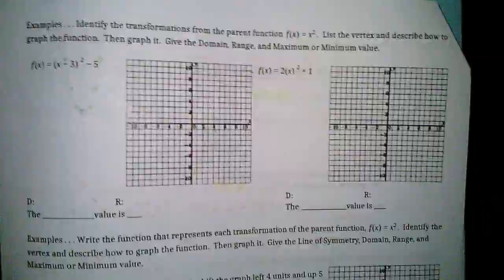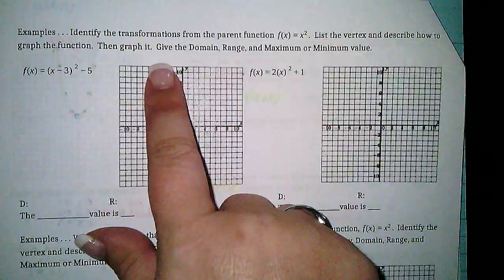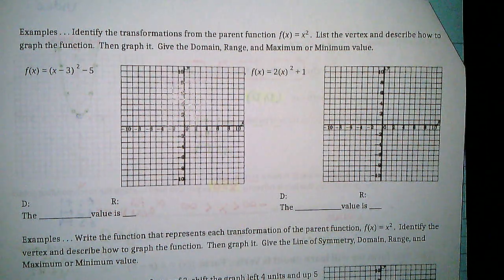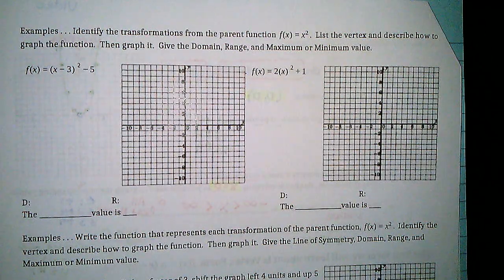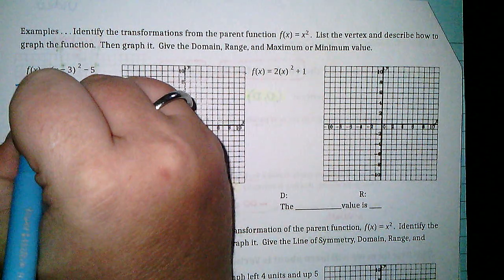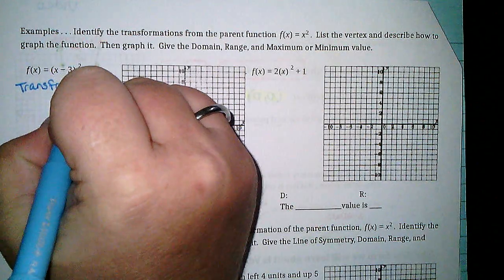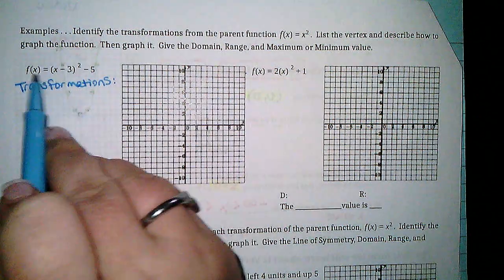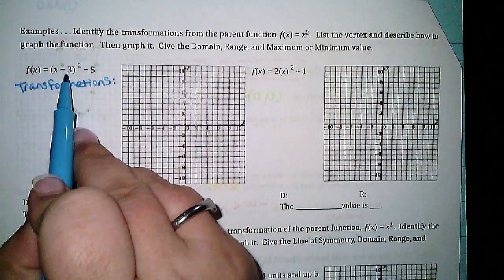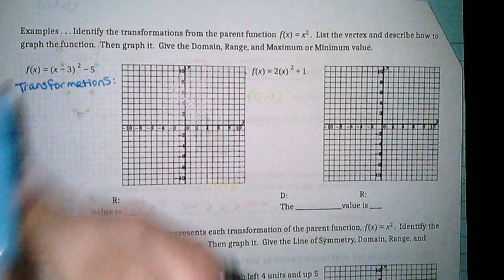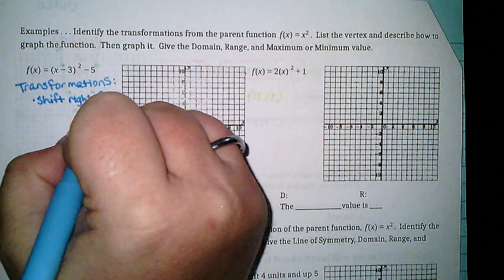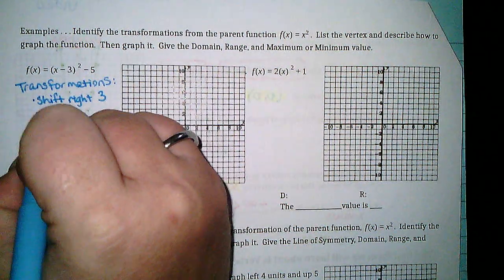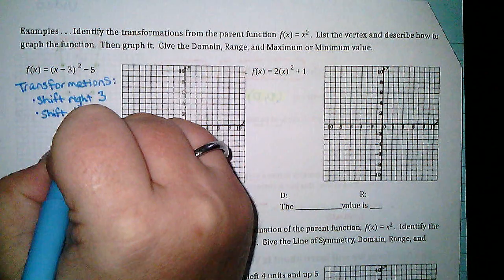Now let's apply this knowledge. When we have these problems, we need to give the transformations, list the vertex, describe how to graph, graph it, and give the domain, range, and maximum or minimum. For the first example: transformations are anything that is not x or the squared. Starting after my equal sign — the minus 3 inside is a shift right 3, and the minus 5 outside is a shift down 5. So transformations are shift right 3 and shift down 5.